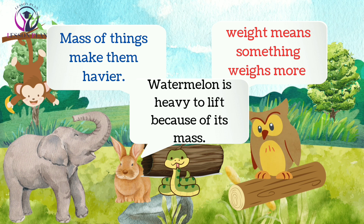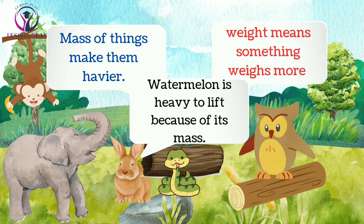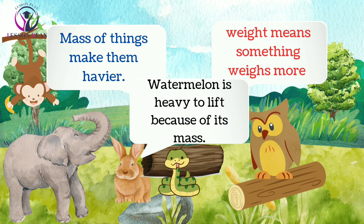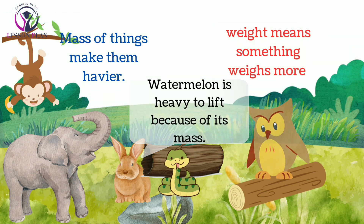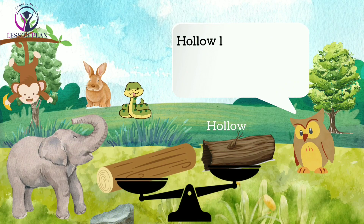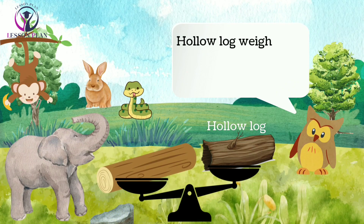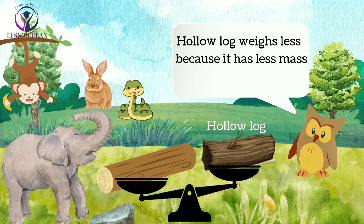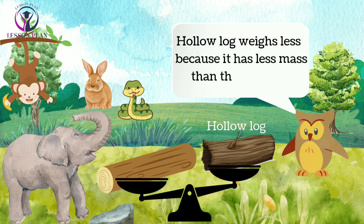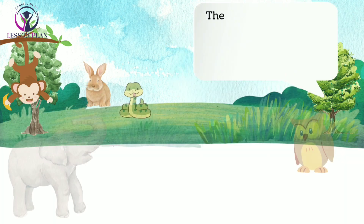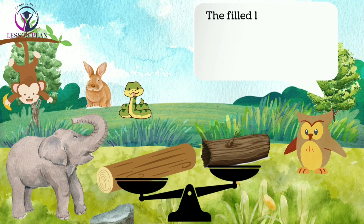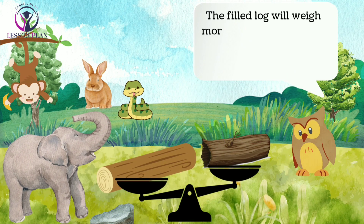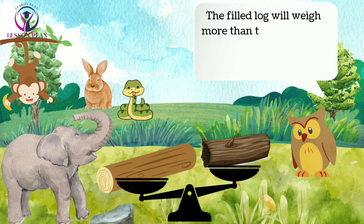He said, "Let's take two objects — one is a hollow log and the other is a filled log. Both are of the same size. Now, both of these objects have different masses. The hollow log is lighter than the filled log, and the reason is that it has less matter. The filled log has more matter, so it is heavier than the hollow log."